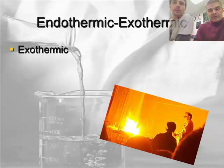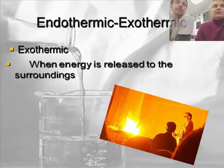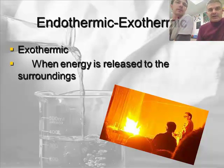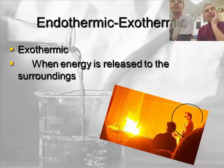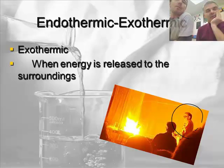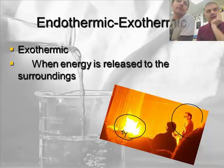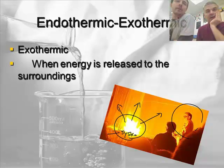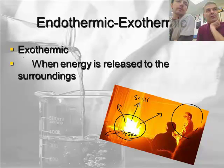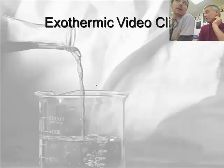So let's talk about exothermic. There are two ways that energy can be transferred — either exothermically, and exothermically is when the energy is released to the surroundings. We have a big fire here — this would be the system — and the energy is being released. Everyone's standing back because it's quite hot; some kind of a big fire experiment. And these are the surroundings. So it's going from the system outward, and that is called exothermic, when energy is released to the surroundings.